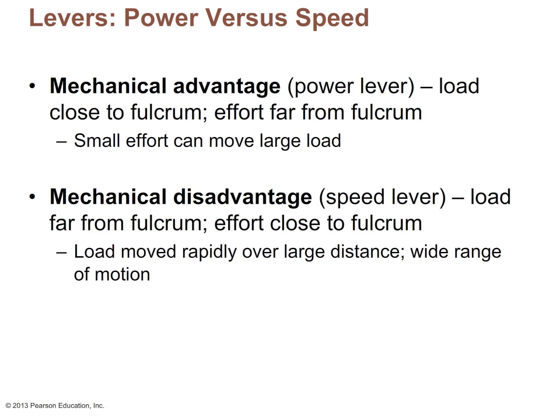Lever systems are classified into one of two broad categories: those that operate at a mechanical advantage, or those at a mechanical disadvantage. Lever systems at a mechanical advantage are called power levers — the load is closer to the fulcrum and the effort is further away, so a small effort can move a very large load. Levers at a mechanical disadvantage are called speed levers — the load is far from the fulcrum and the effort is close, giving a large range of motion and very quick movement, but they're not efficient at moving heavy weights.